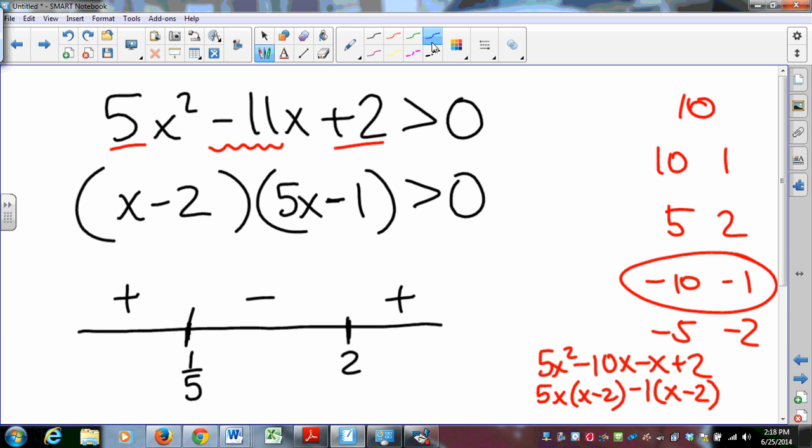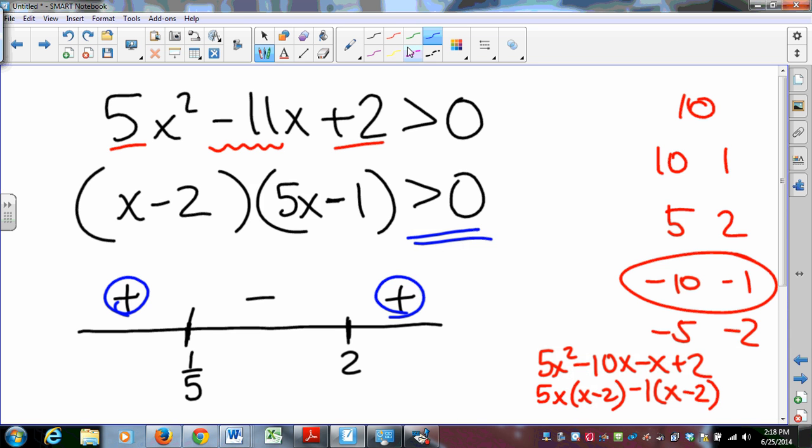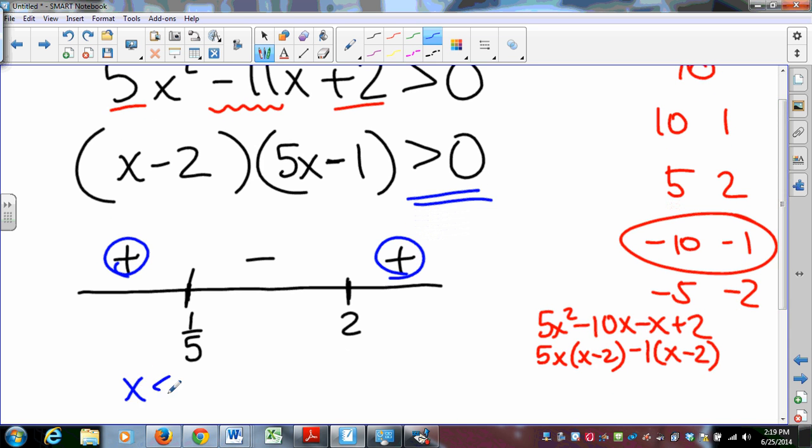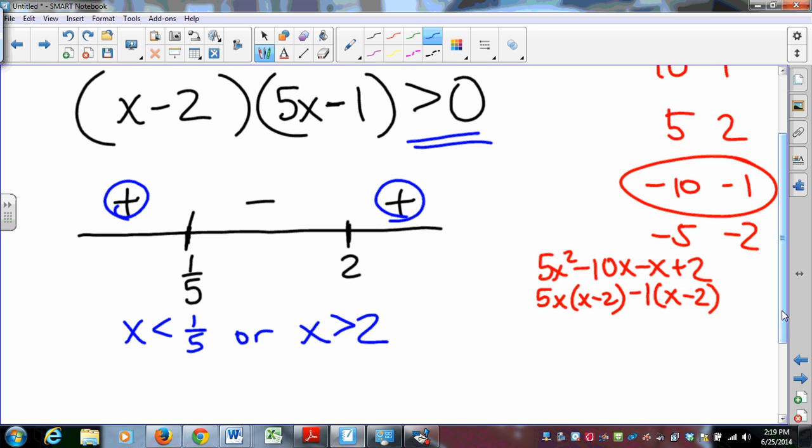Now, what do I want? I want to know when the parabola is positive, when the parabola is above the x-axis, and since I want to know where the parabola is above the x-axis, I want to pick the places where the graph is positive, and that happens if x is less than 1/5 or greater than 2.